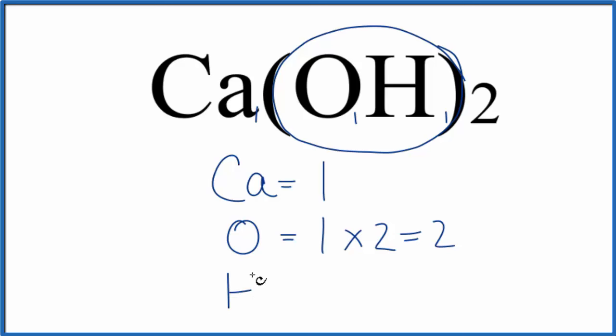Same thing for the hydrogen. We have one hydrogen, we're going to multiply that by two. That gives us two. One plus two plus two, we have five total atoms for Ca(OH)2, calcium hydroxide.